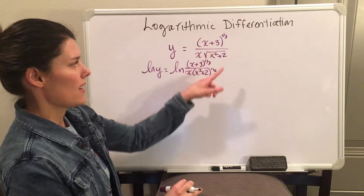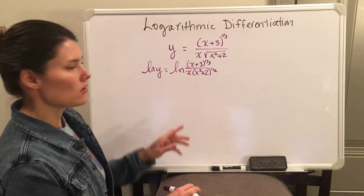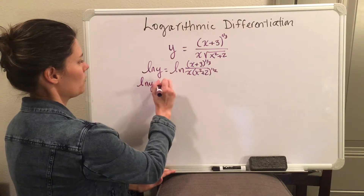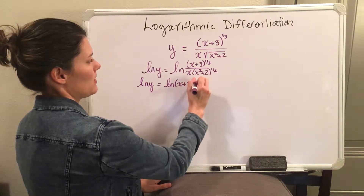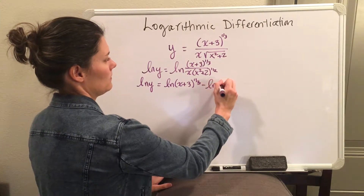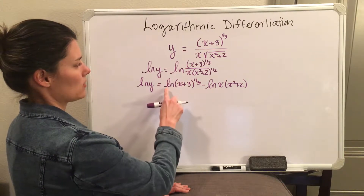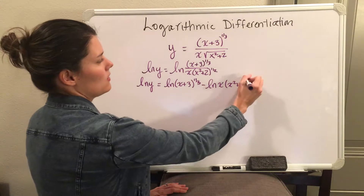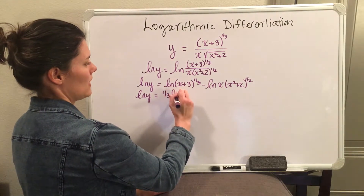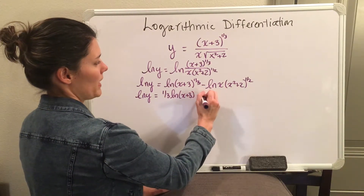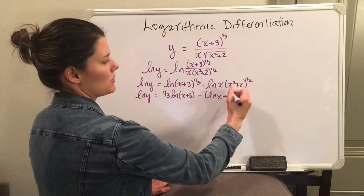I also went ahead and rewrote the square root power as one-half. The reason you would want to do this is because on the right-hand side we can use log properties to break down the function. When you want to separate a quotient, you separate the log using a subtraction sign. If you have a power, you can bring the power down to the front, and if you have a product, you can separate it using a plus sign. So now I have natural log of y equals one-third natural log of x plus 3, minus the natural log of x, and since this is a product I'm also going to separate it with a plus sign and move the one-half power down.